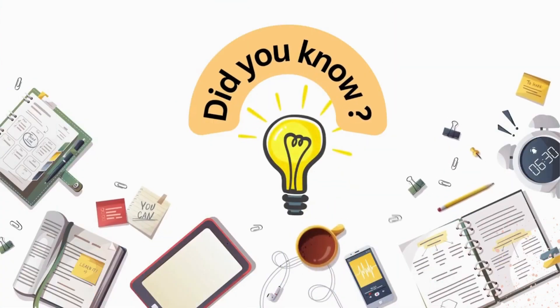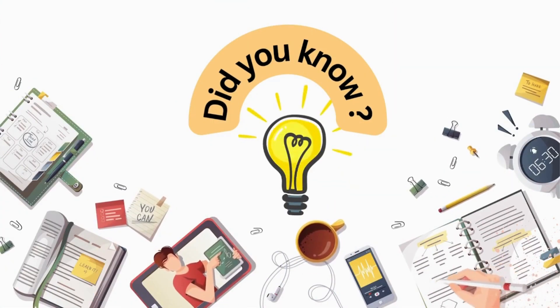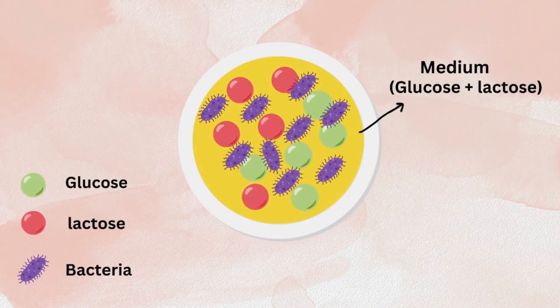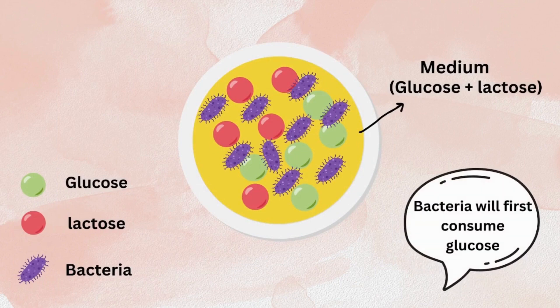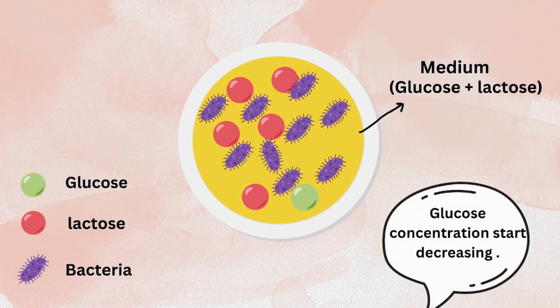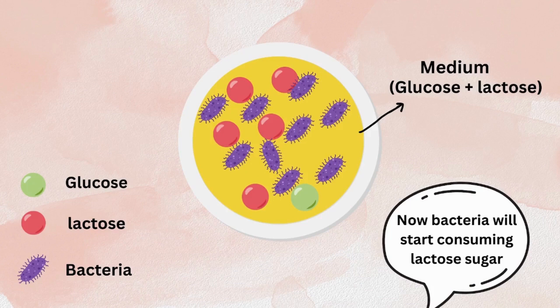Now it's time for a fact. Did you know? If there is a medium containing both glucose and lactose, the bacteria will first consume the glucose. As the concentration of glucose starts decreasing, the bacteria will start consuming the lactose sugar. It is easier to consume a monosaccharide, so bacteria will first consume glucose over lactose because glucose is a monosaccharide.